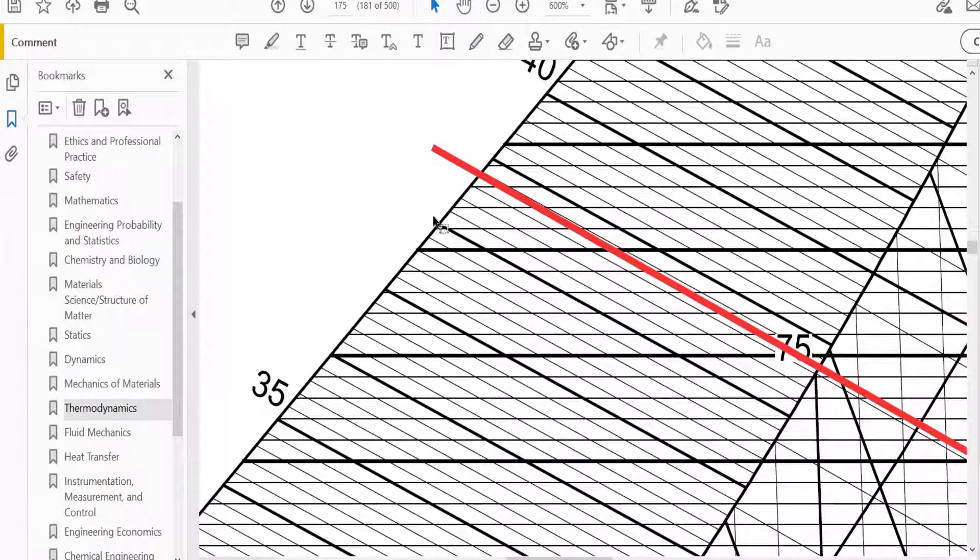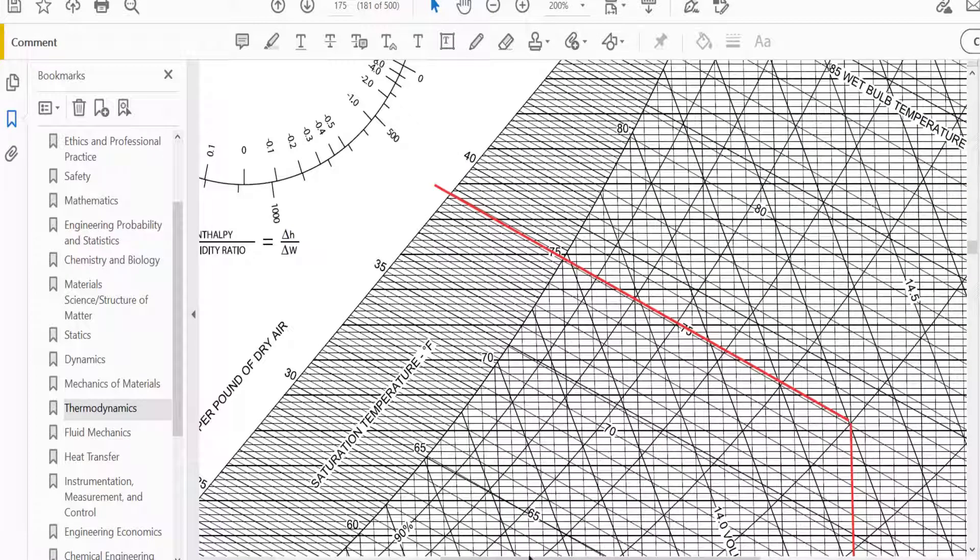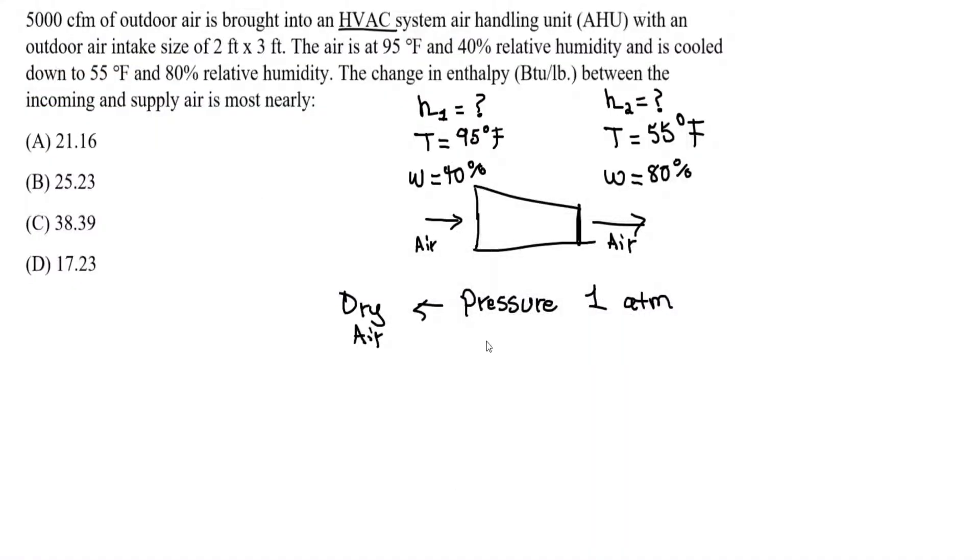So we're at 38, and counting the increments, this is 39. So we're at around 38.8. So that's going to be our H1. So let's write that down. H1 is around 38.8 and it's BTU per pound. So we found H1.